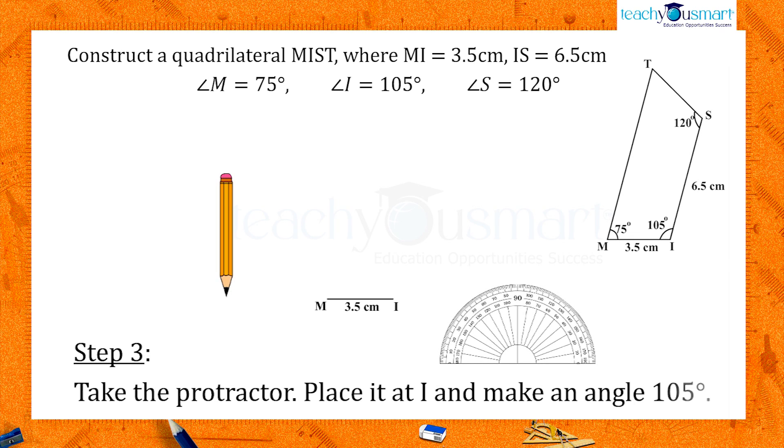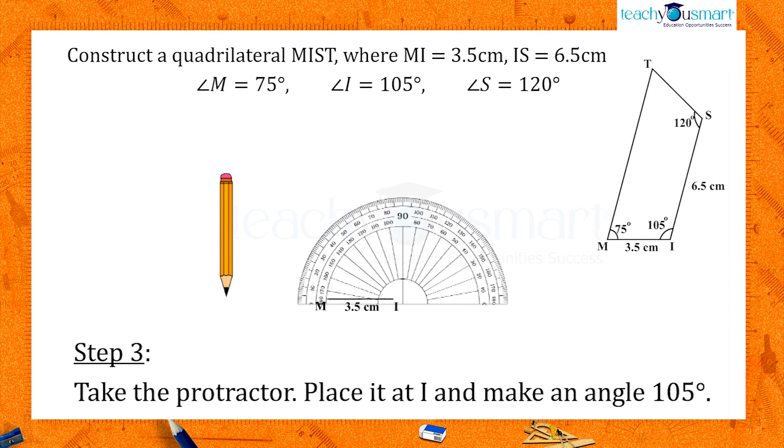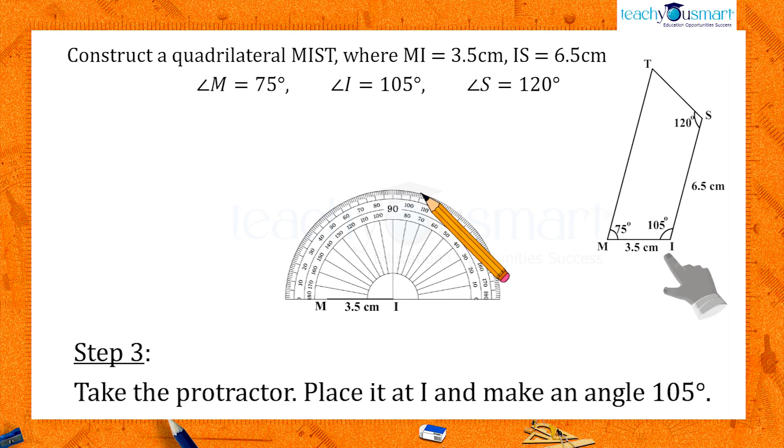Take a protractor, place it at I, and make an angle 105 degrees.